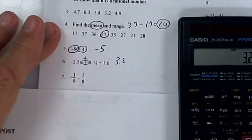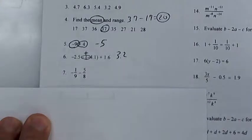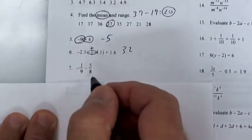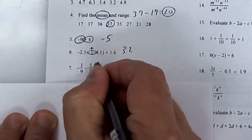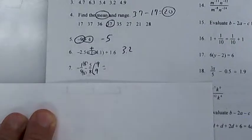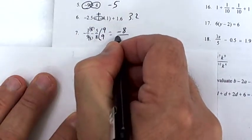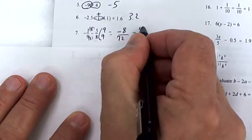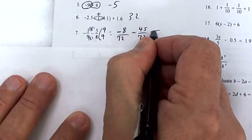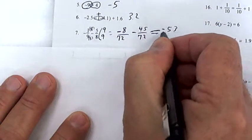This one is a fraction — you need the same denominator. I'll multiply this one by 9 and that one by 8. It may not be the lowest common denominator but I'll reduce it. So I get −8 over 72 minus 45 over 72. Since the signs are the same, add them: −53 over 72.